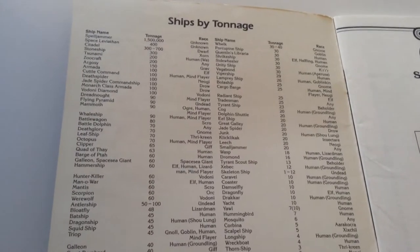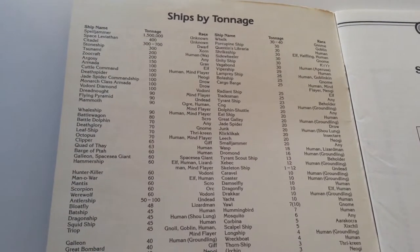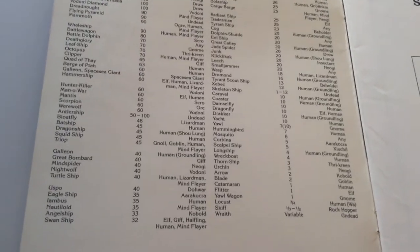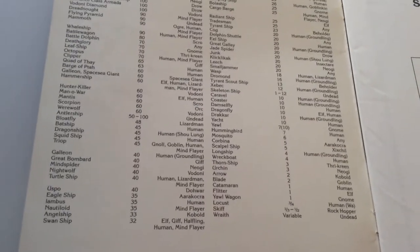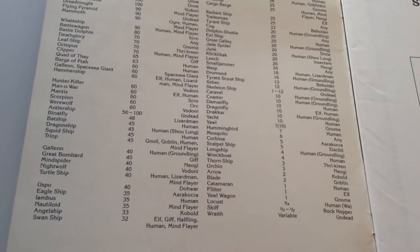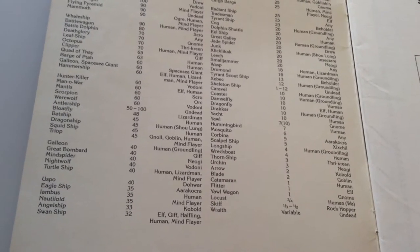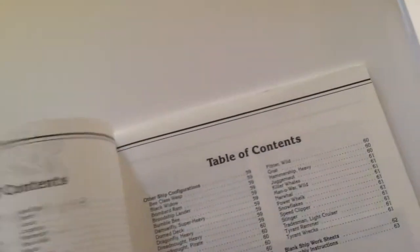Here's a list of them by tonnage, with the spell jammer at more than a million tons being the biggest, all the way down to the locusts and the skiff which are less than one ton. So it's got a list of all the ships.